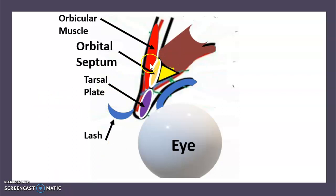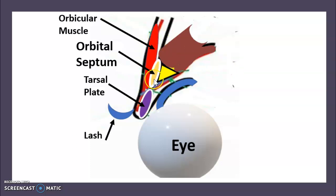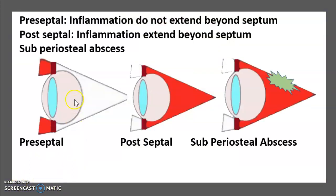The anatomic criterion to distinguish between the two entities is the orbital septum. This is the border between what is preseptal and what is orbital. The orbital septum is the anatomic barrier between both entities — here is that barrier.